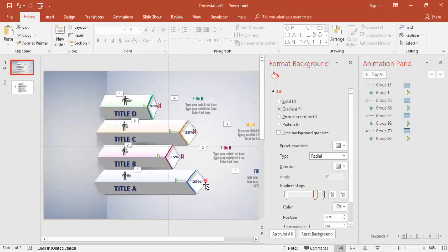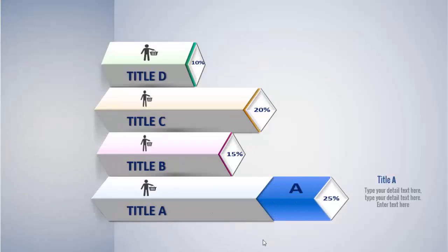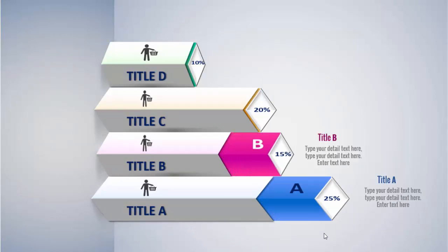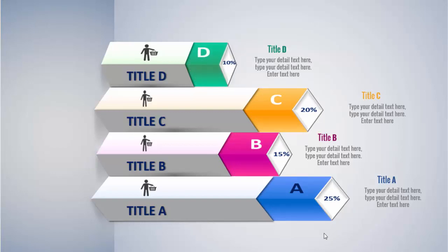This is how the finished chart will work. Option A and the title will appear here, then Title B, Title C, and Title D.